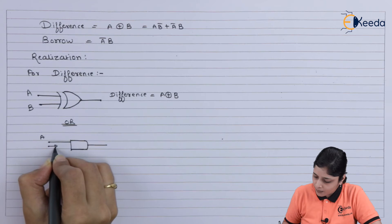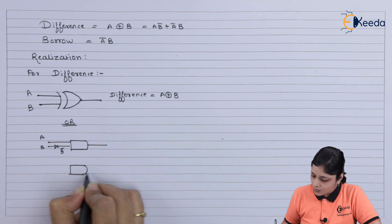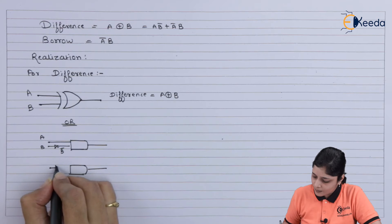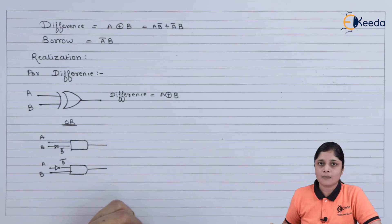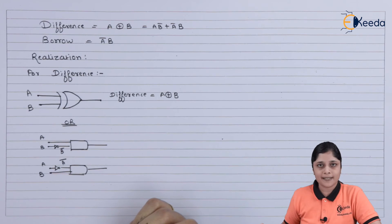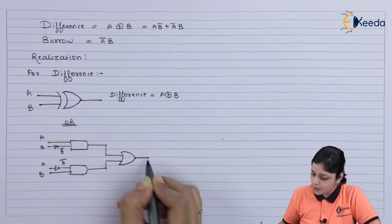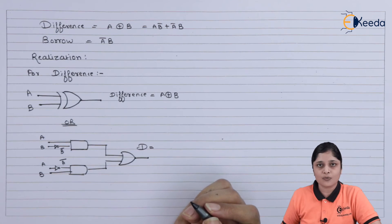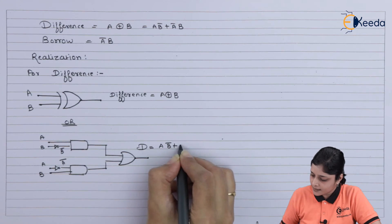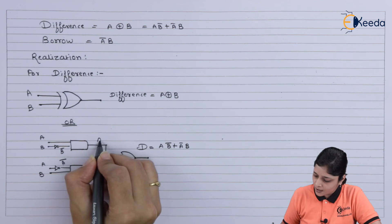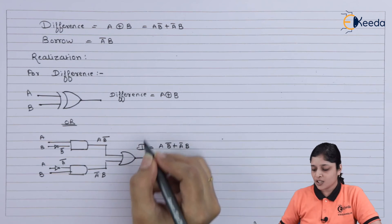With basic logic gates: for A·B-bar, input A is direct and B passes through a NOT gate to give B-bar. For the next term A-bar·B, input A passes through a NOT gate to give A-bar combined with B. Then you take the OR of these two terms and finally get the equation for difference, denoted D, as A·B-bar + A-bar·B.